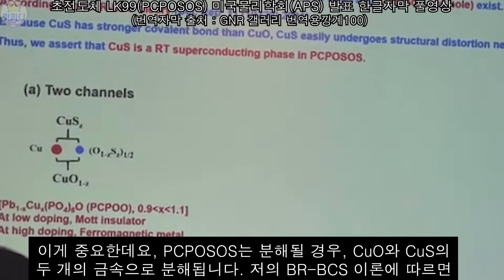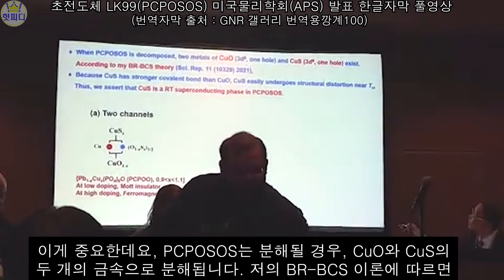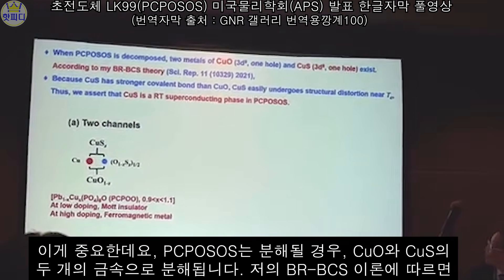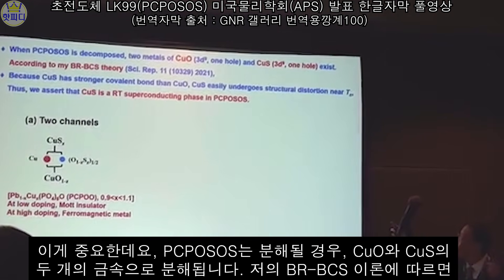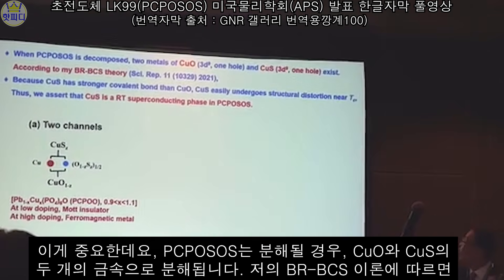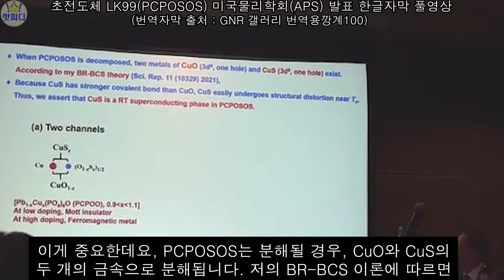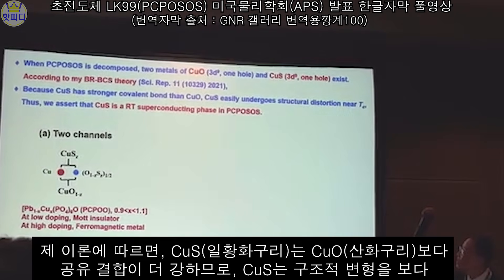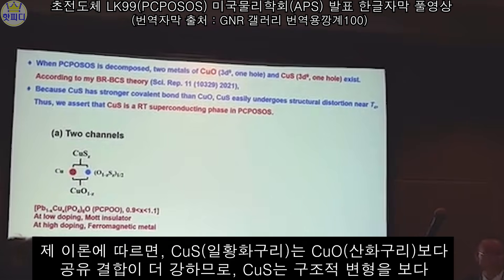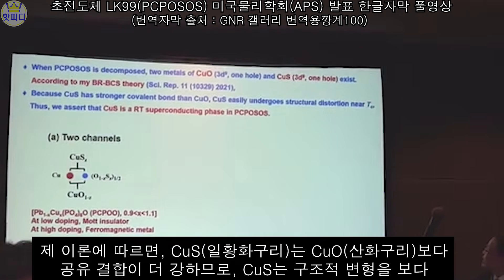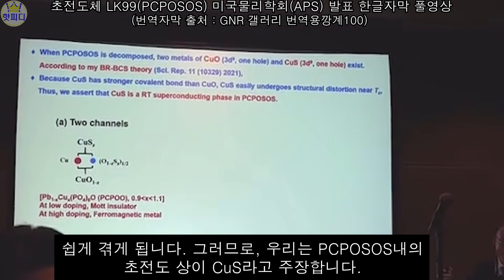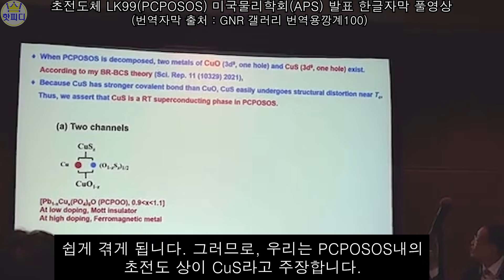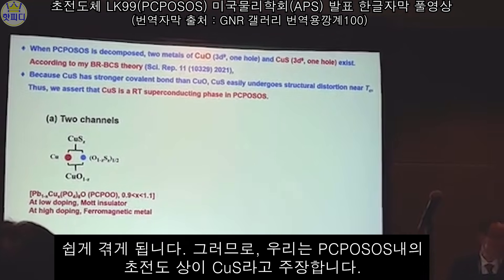Here is important. This process — we can complicate the chemical formula. We can decompose it into two metals: CuO and CuS, whole-time metals in this. According to my DRGC theory, CuS has a stronger covalent bond than CuO. CuS has the most effective distortion near DC. So CuS is in a low-end superconducting state in DC. CuS is important.